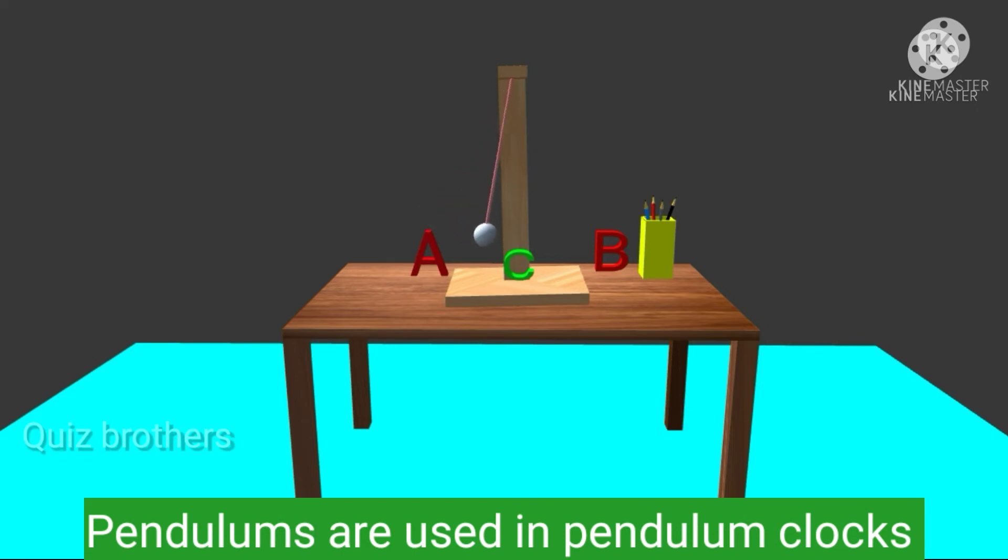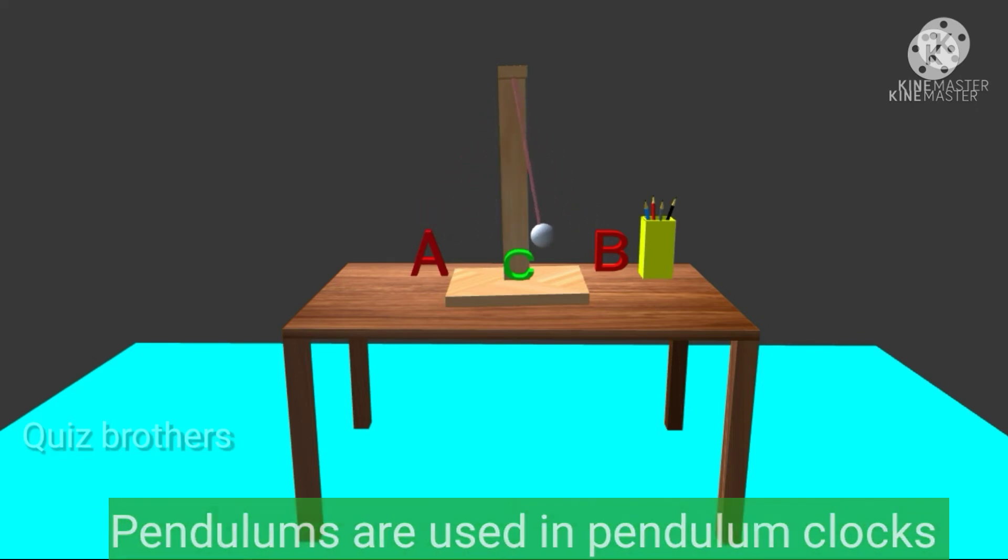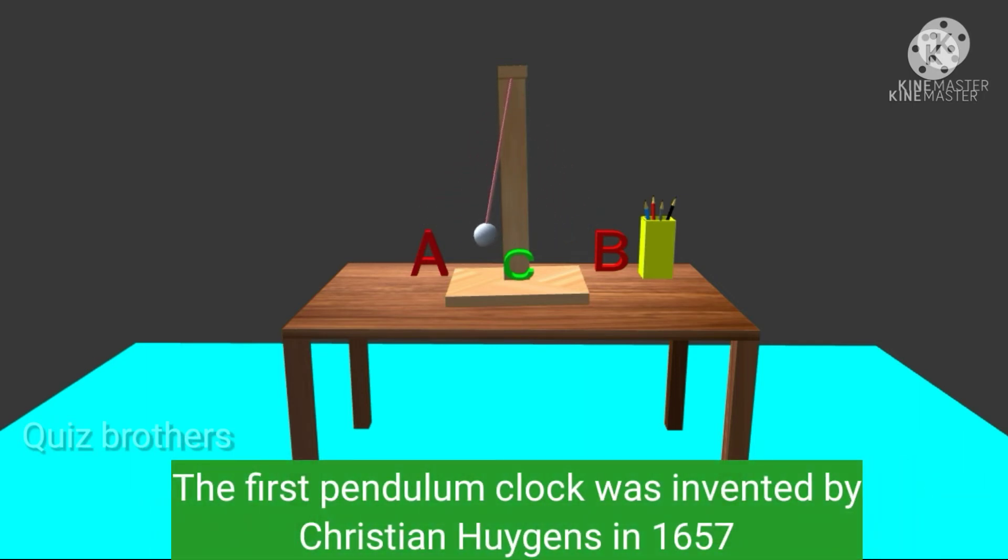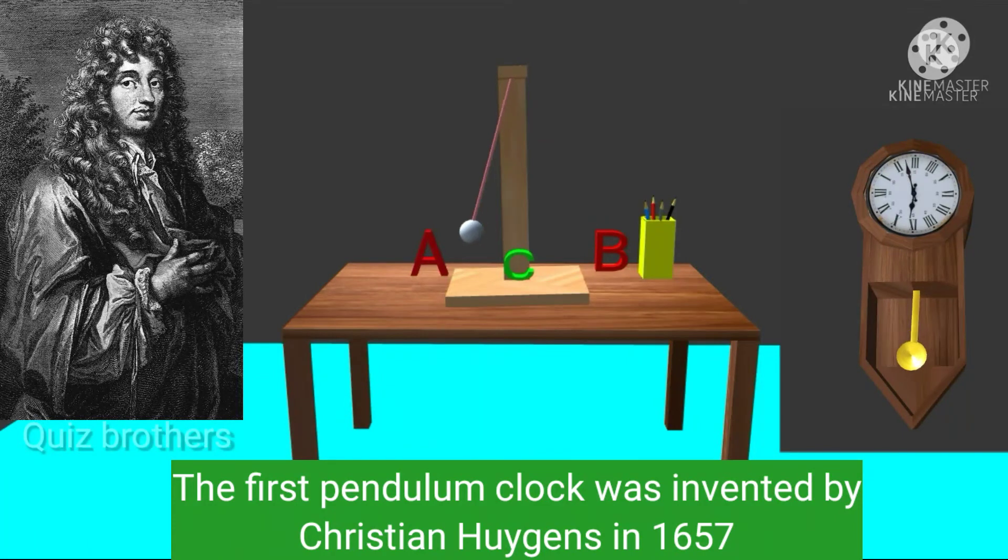Pendulums are used in pendulum clocks. The first pendulum clock was invented by Christiaan Huygens in 1657.